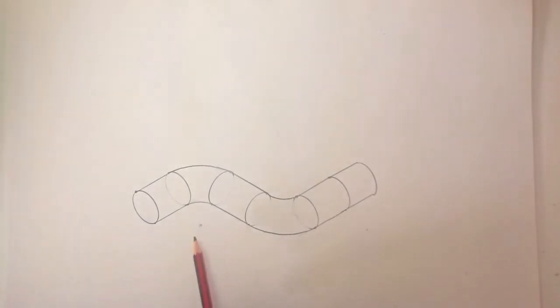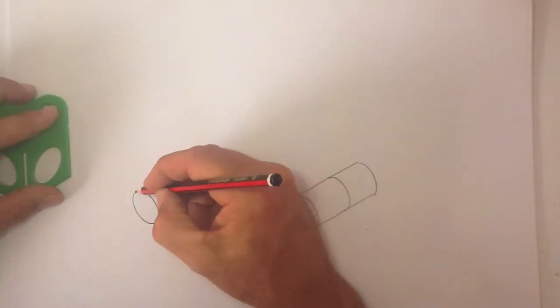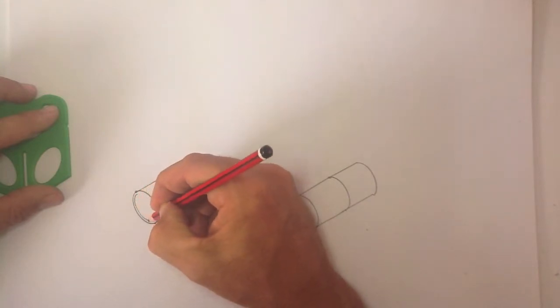If I wanted to make this shape look hollow, then I need to trace around this ellipse on the inside. Like that.